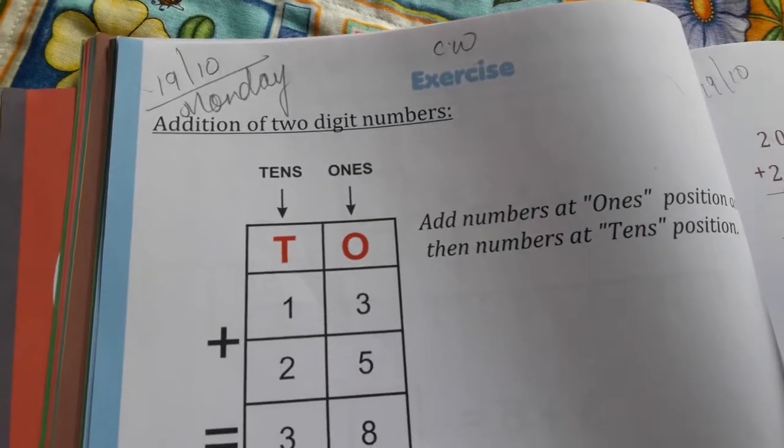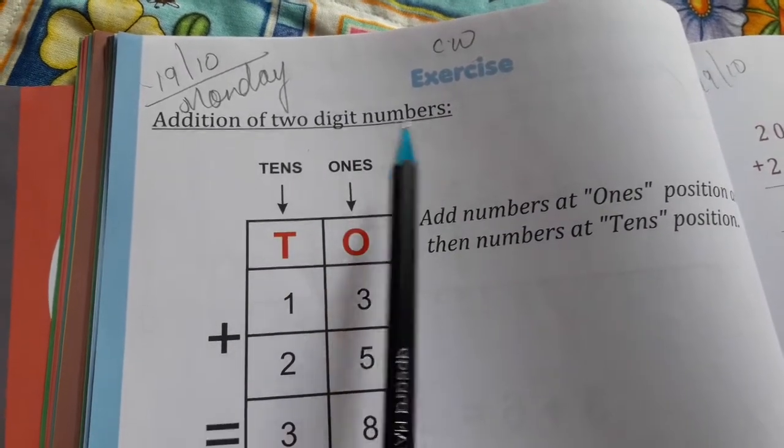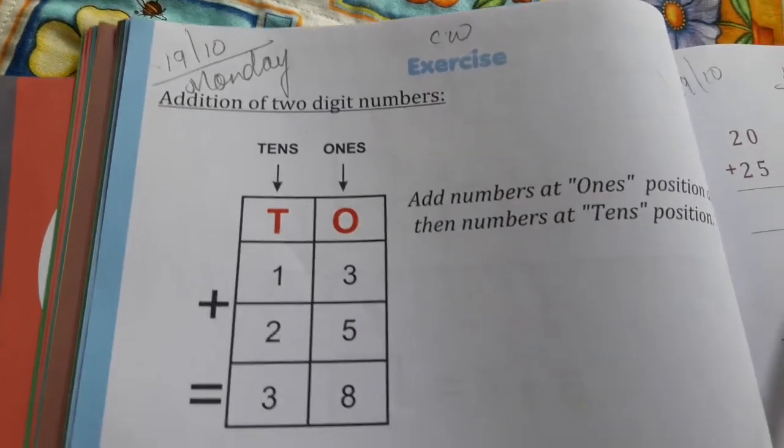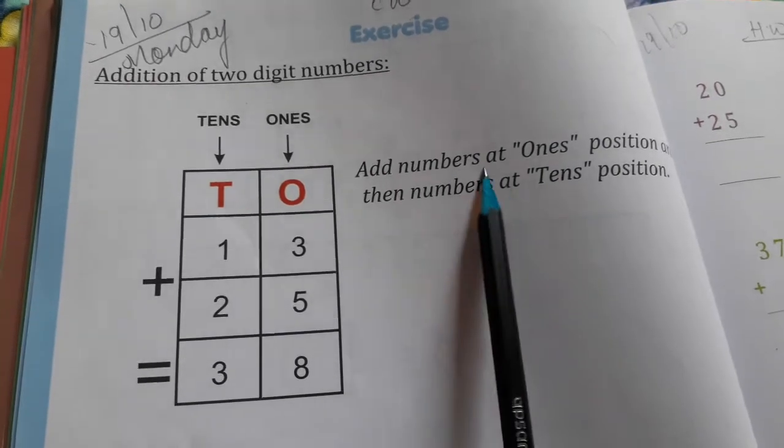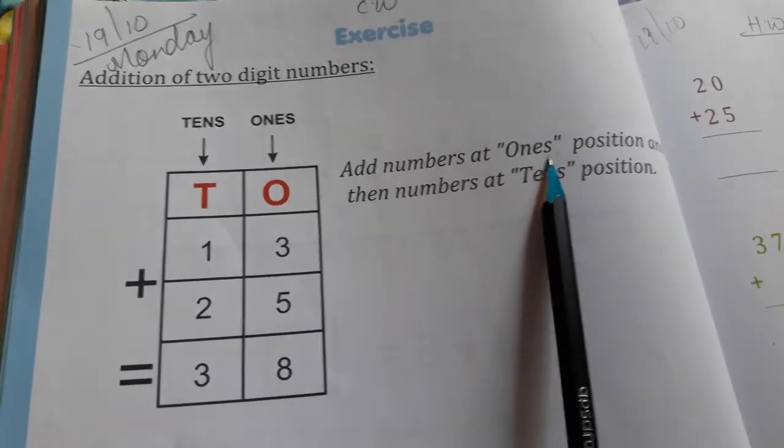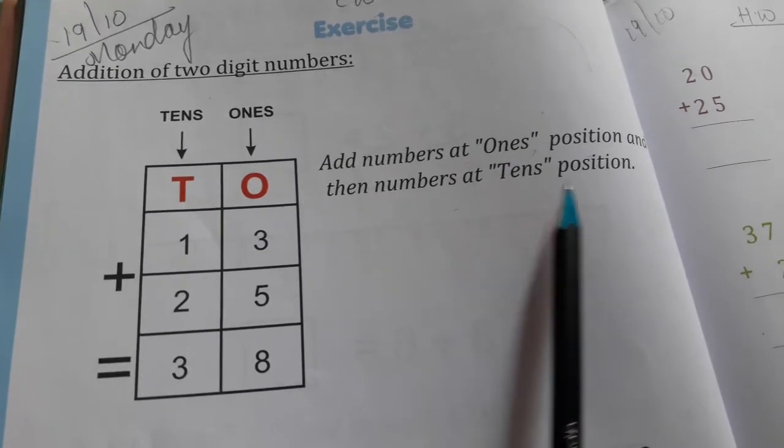Children, today we are going to learn addition of two digit numbers. Add numbers at ones position first, then numbers at tens position.